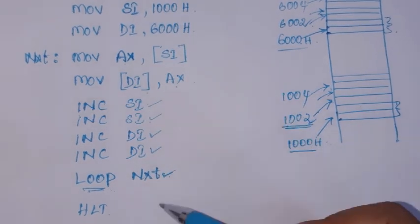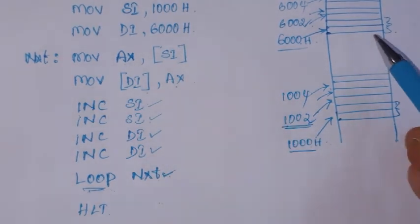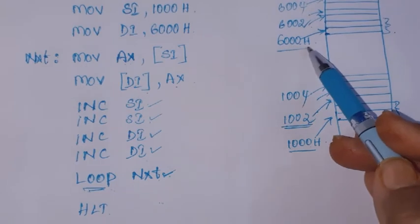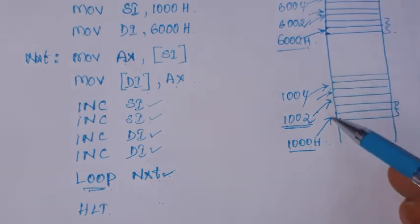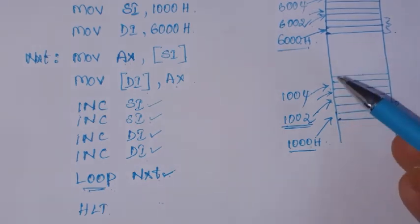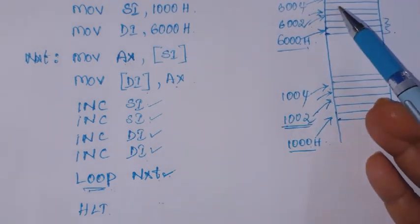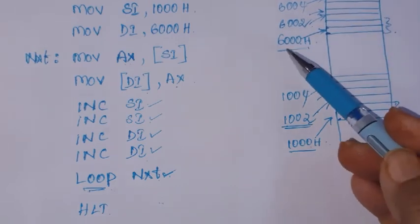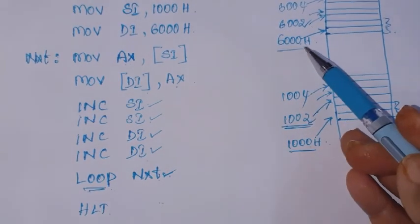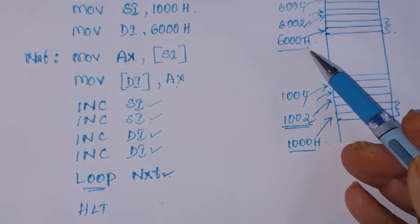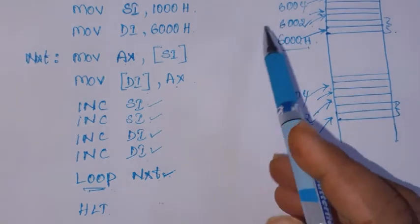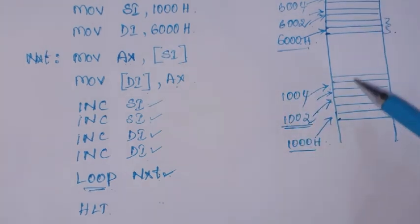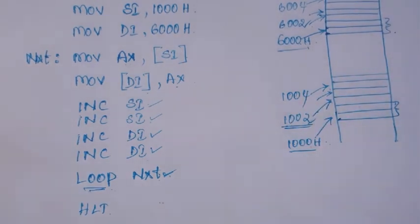Then we write HLT to stop the program. After execution, if you check the contents of 6000H onwards, you will find the same data which was at 1000H onwards has been copied to the destination locations. This completes the program for block data transfer from one location to another.